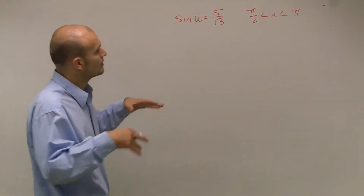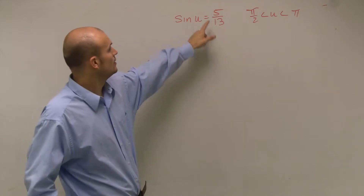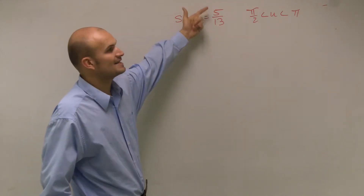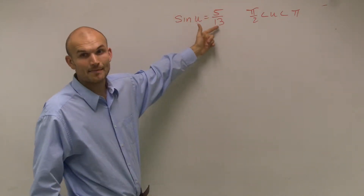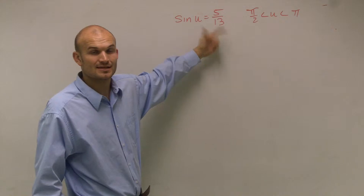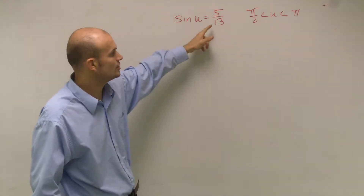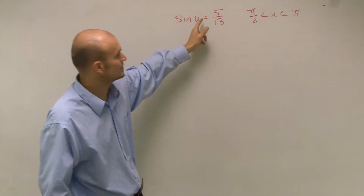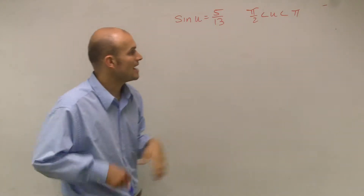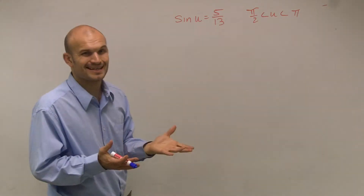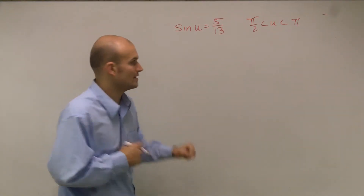We're given sine of u equals 5 over 13. Remember, sine is opposite over your hypotenuse — or opposite over your radius if you're thinking about this as an angle with a unit circle. We also have a constraint that u is between π/2, which is 90 degrees, and π, which is 180 degrees.